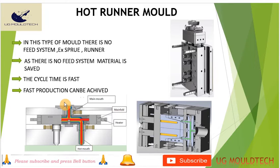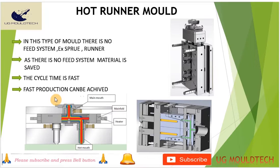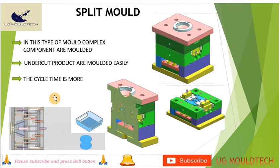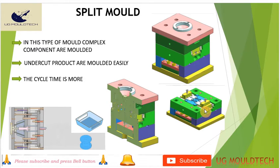Next we move on to the split mold. Complex components which have undercuts are mostly made using the split mold. This type of mold has a longer cycle time because the ejection system takes more time. As you can see, there will be a slider — it will move in and out. The machining cost will also be more, but the rest of the things are all the same as we discussed.